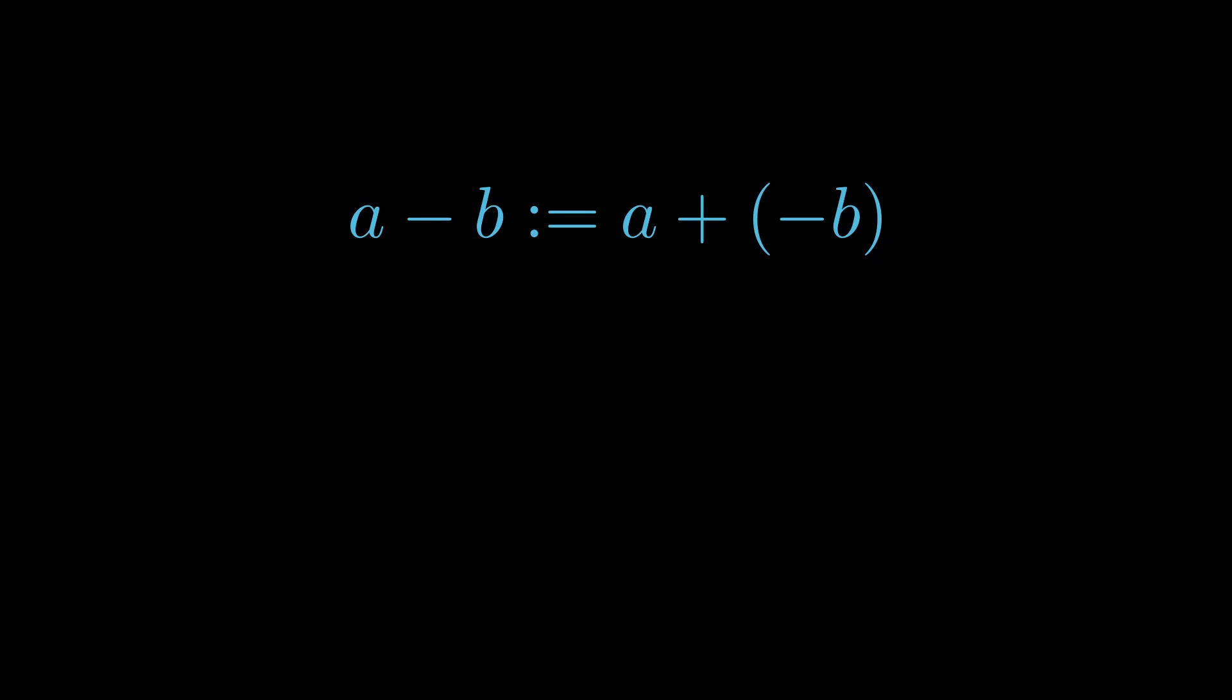We can define subtraction and division by letting a - b represent a + (-b), and letting a/b equal a × (1/b), assuming b is non-zero. The colon equals symbol here is used for emphasis to indicate that these are definitions.